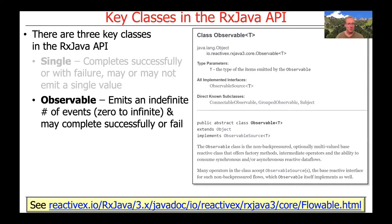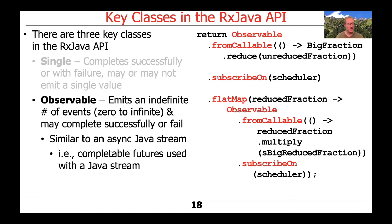The next important type in RxJava is something called the Observable. It emits an indefinite number of events — from zero to infinite — and it may complete successfully or it could also fail. It's very similar to an async Java stream where you might use CompletableFutures with a sequential stream to have a stream of asynchronous processing operations. It's also somewhat akin to a Flux in Project Reactor, although we'll see some important differences as we dive deeper later.